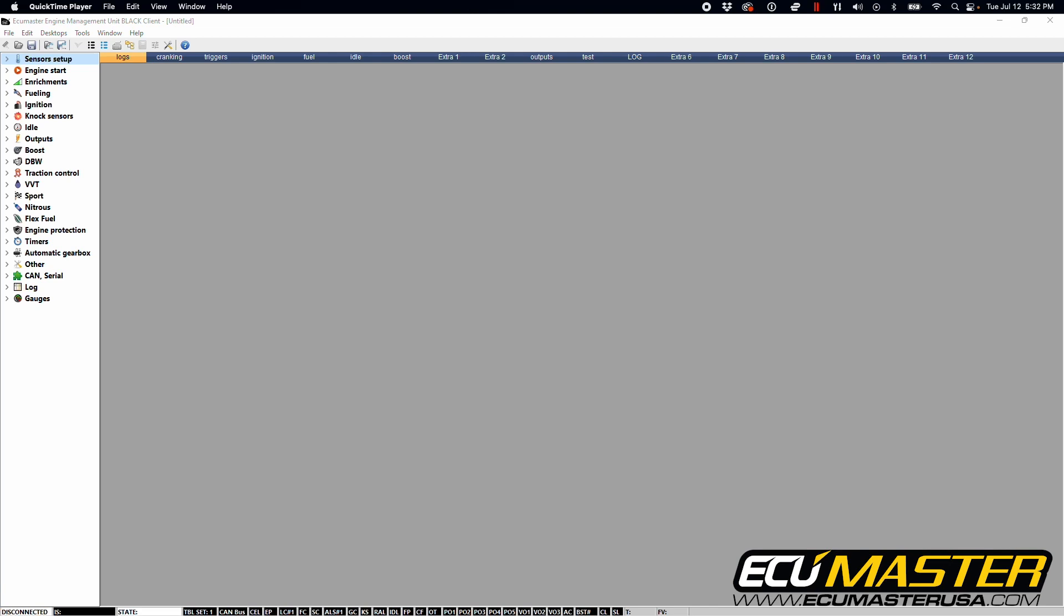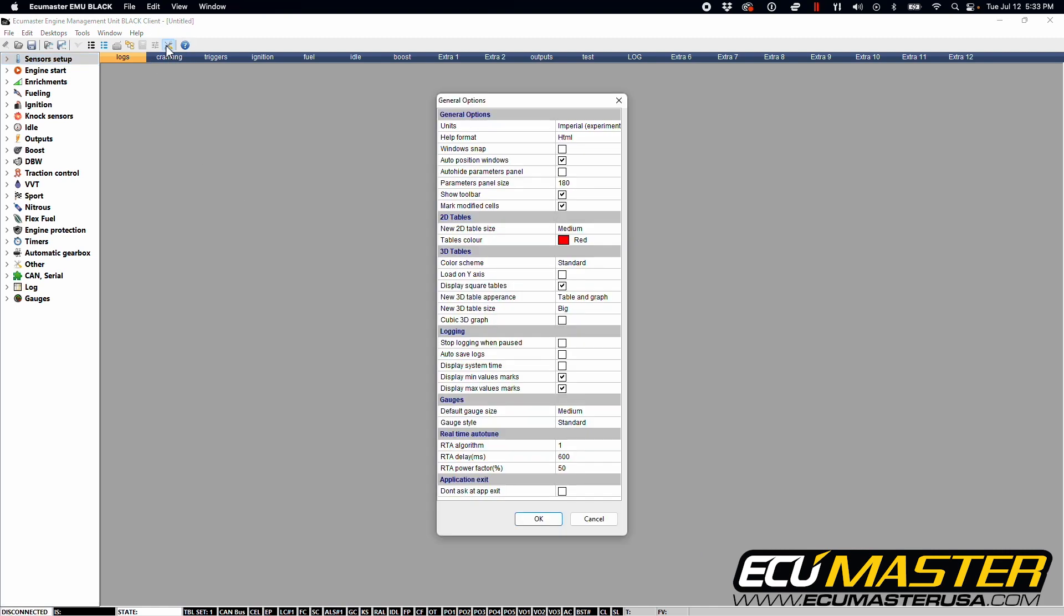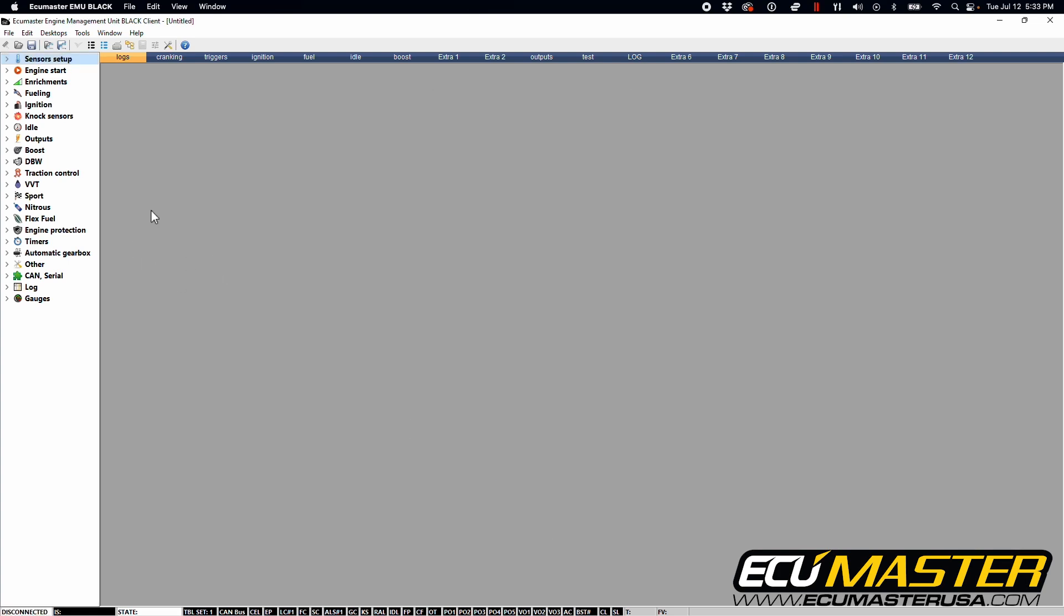So now that we have our three and a half bar map sensor wired into our EMU Black, we're going to go into our EMU Black client software and get the sensor configured properly for the range of its operation. First, we're going to start by going to the configurations tab to open that up and switch the units from imperial to metric. Our sensors are sold showing metric values, so we're going to configure them in the metric windows.